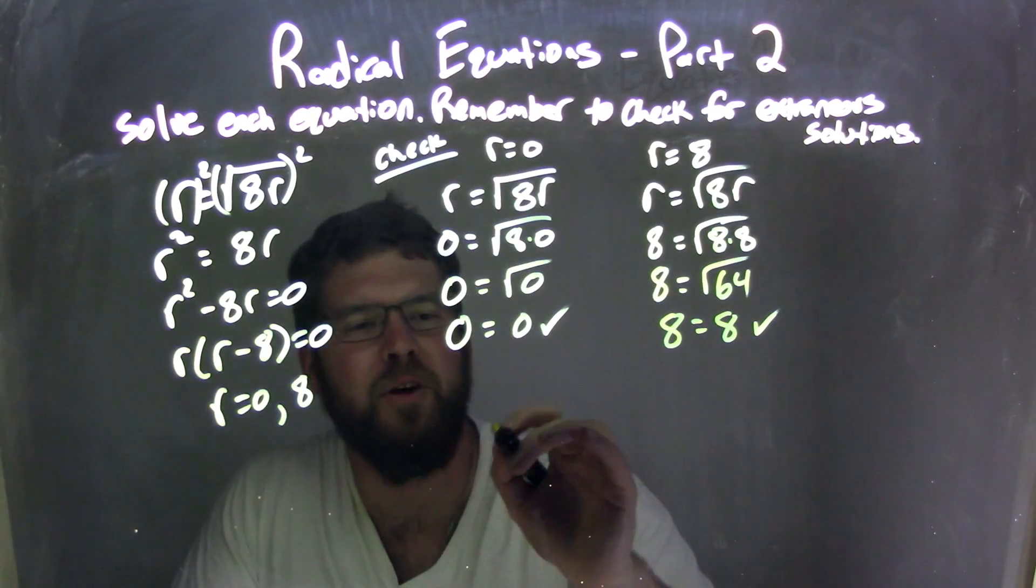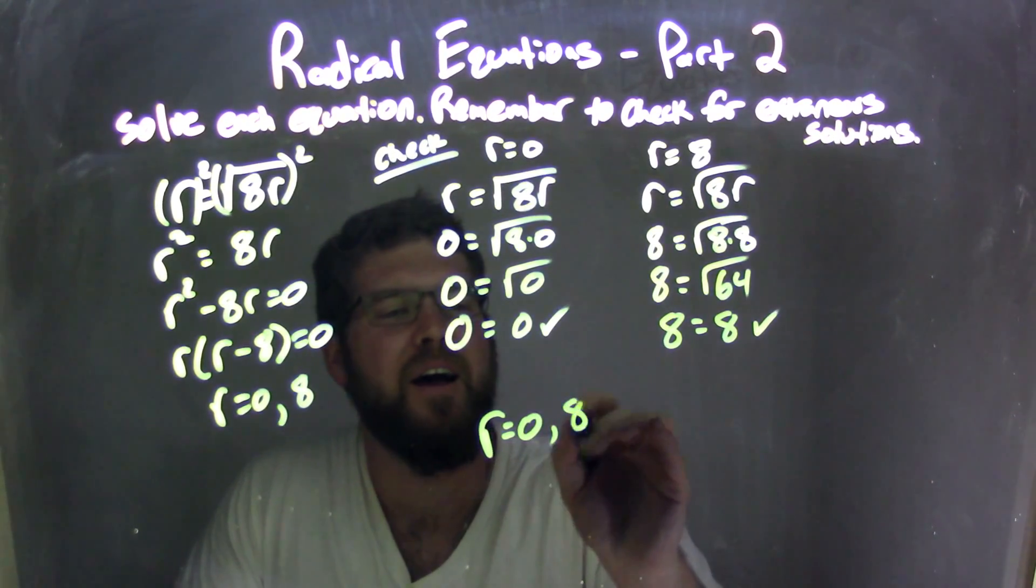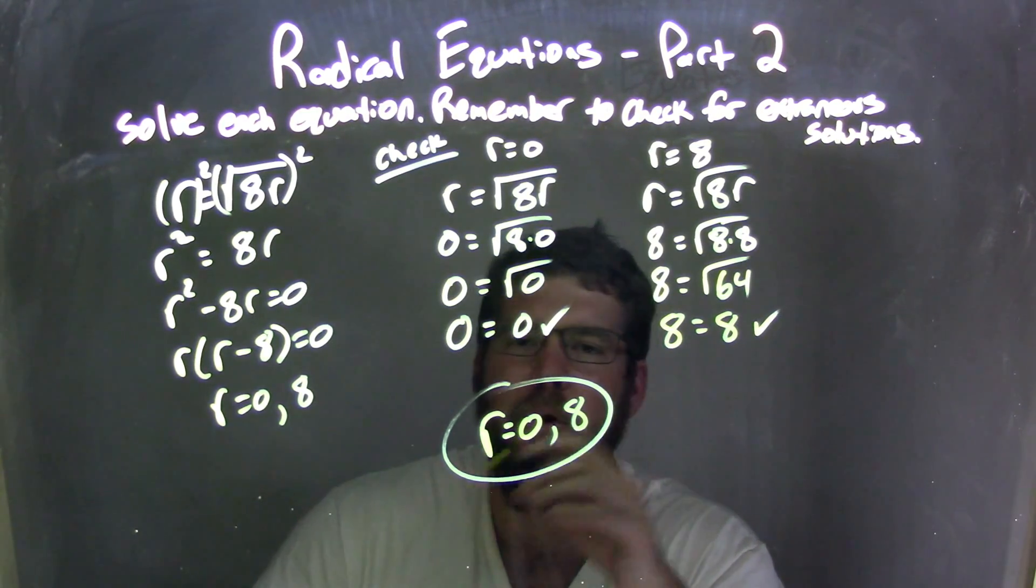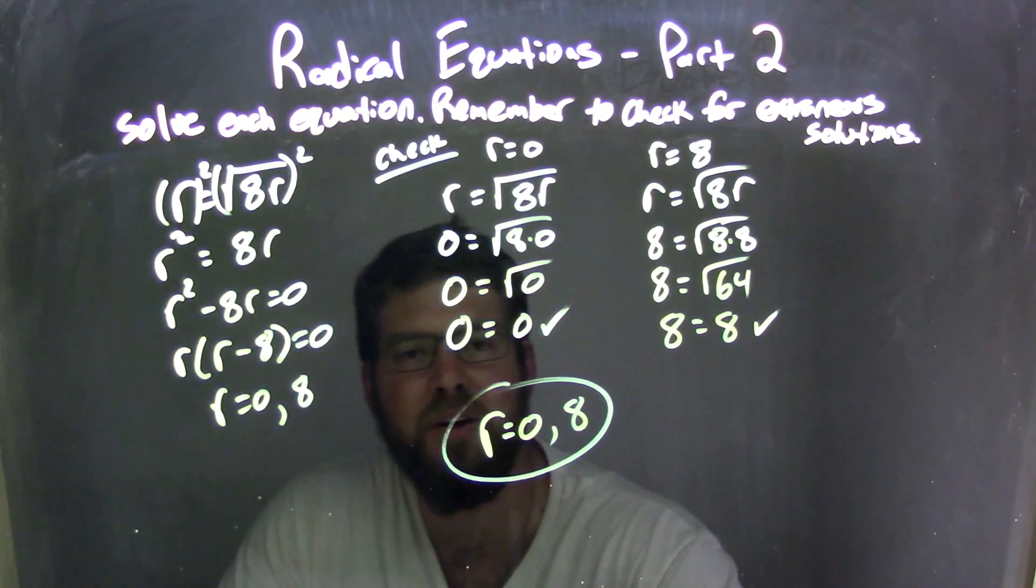That means both of these are true. No extraneous solutions here, folks. We have r equals 0 and r equals 8. Both are true, both are fantastic, and we're good to go.